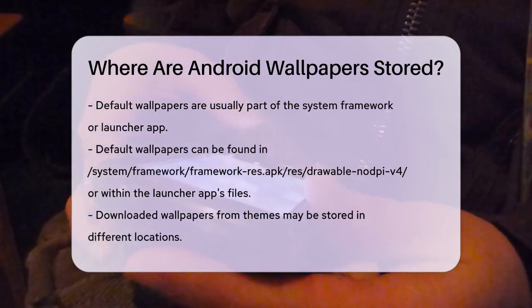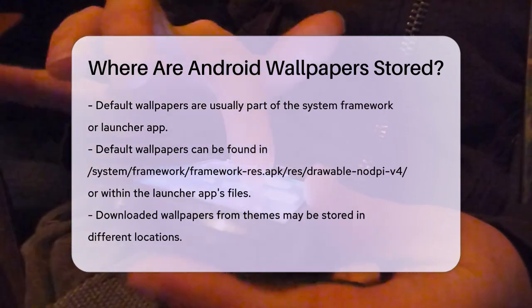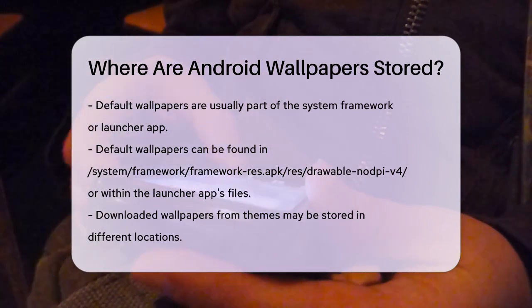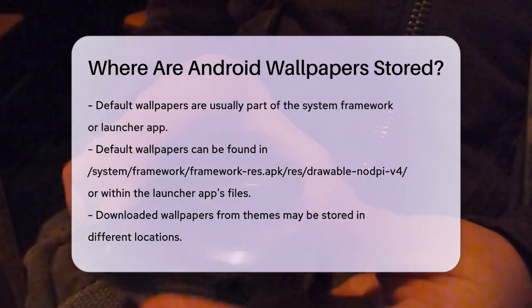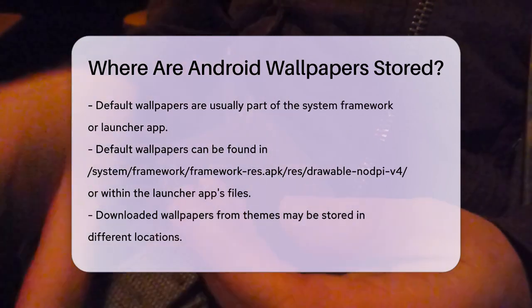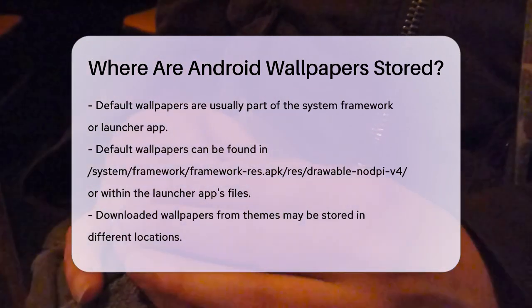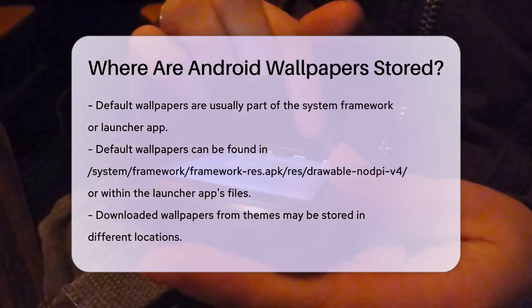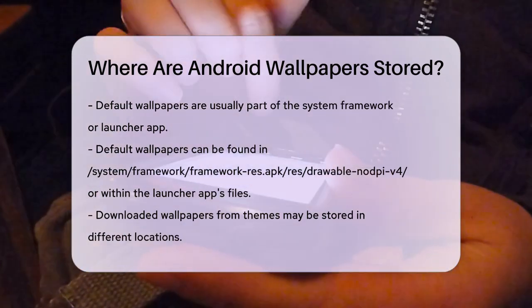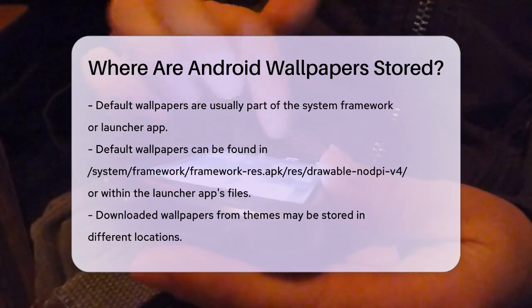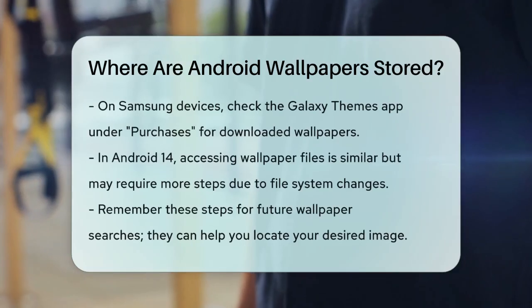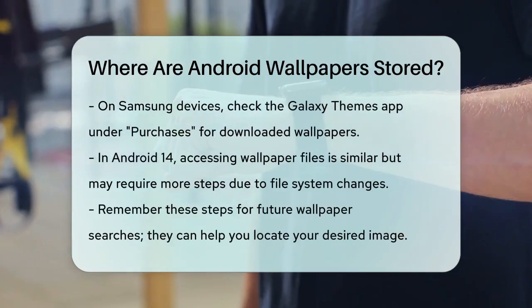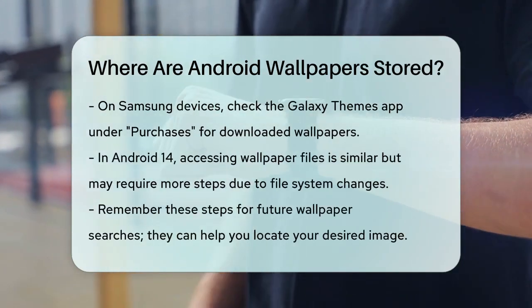If you've downloaded wallpapers from themes or other sources, they might be stored in different locations. For example, on Samsung devices, you can check the Galaxy Themes app under the purchases section to see if the wallpaper is there.